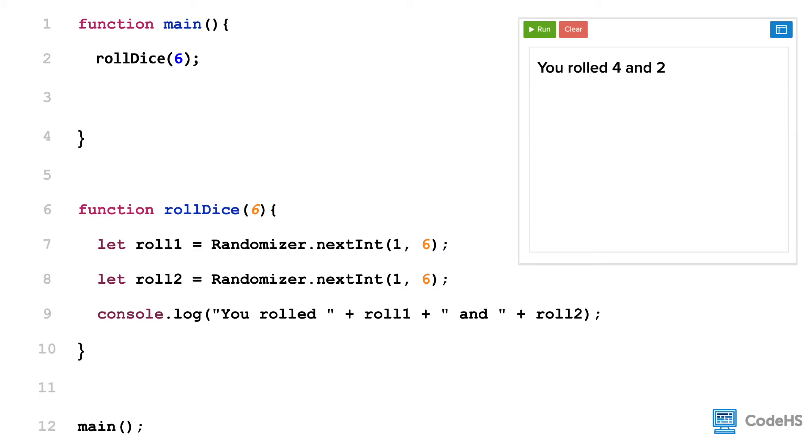So, when we run our program, we get the output of two random numbers between the values of 1 and 6. We can add another rollDice command and pass in the argument of 12. Now, when we run our program, the computer will execute the rollDice command with the argument of 6. Then, it will execute the rollDice command with the argument of 12.